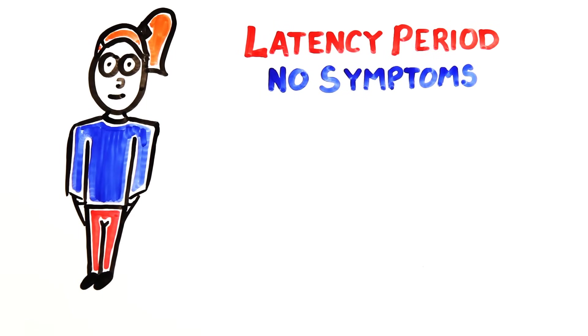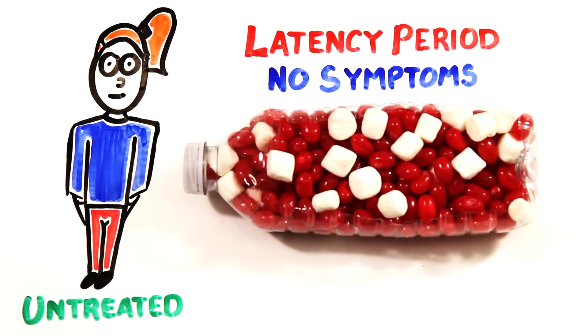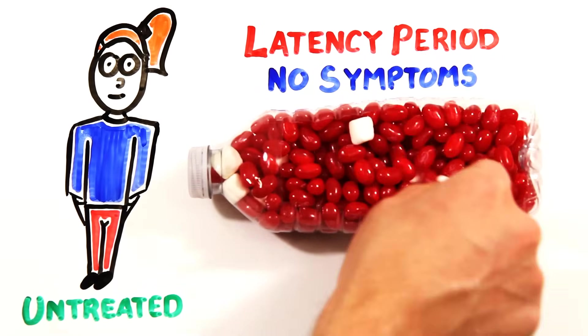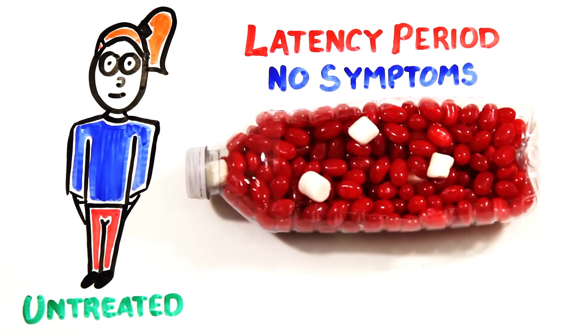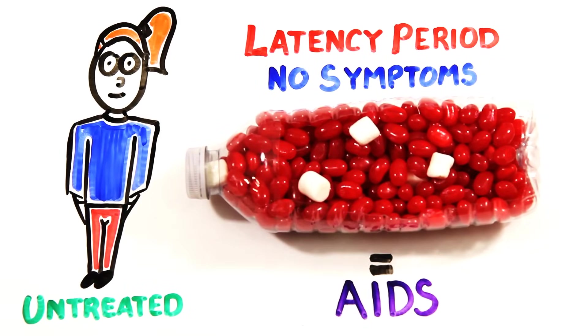If not treated, the HIV eventually kills off the specific T cells it infects. When these T cells fall below 200 cells per cubic millimeter of blood, it becomes acquired immune deficiency syndrome, or AIDS.